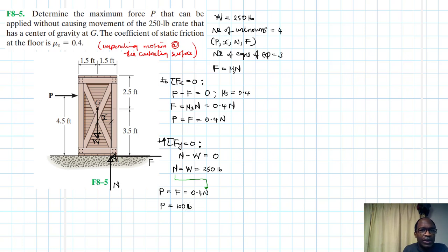But we are not yet done. Let's take moments to check the overturning. Let's take moments about this point. Let me call this point B. So summation of moments about point B equal to 0. Anticlockwise being our reference. We have minus P by 4.5, and then we have plus W by X equal to 0.